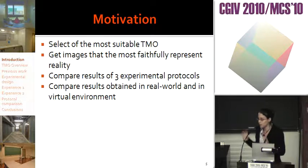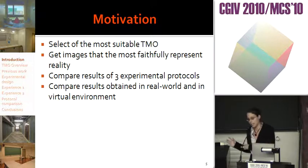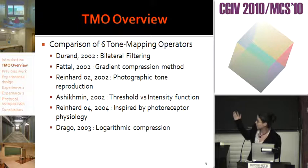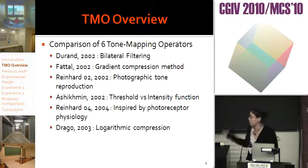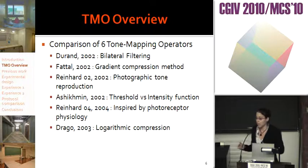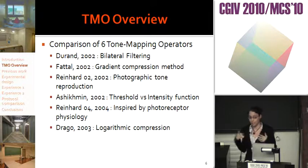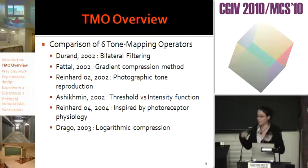In this study, we want to compare results obtained with three different experimental protocols, and especially results obtained in virtual environment and in the real world. I am showing you the six tone mapping operators chosen to compare in this study: Durand, Fattal, Reinhard 2004, Ashkhmin, Reinhard 2004, and Drago. Reinhard 4 and Drago are global operators — the same process is applied to all pixels. Durand, Fattal, Reinhard 2, and Ashkhmin are local operators, meaning they adapt the action for each pixel taking into account its surroundings.